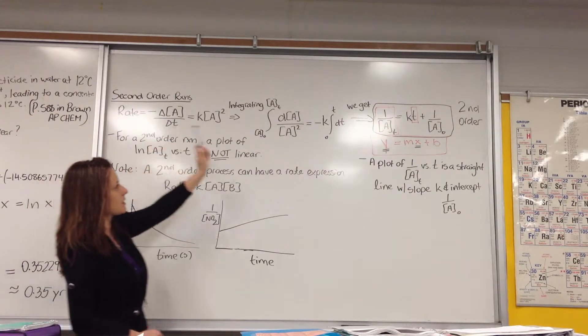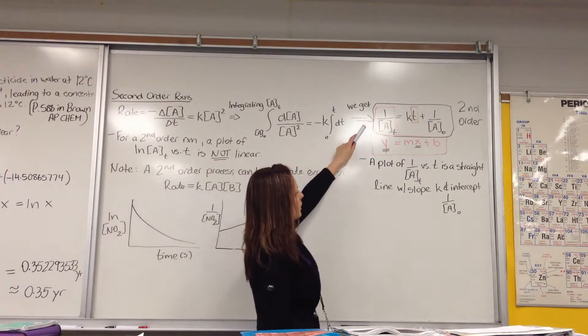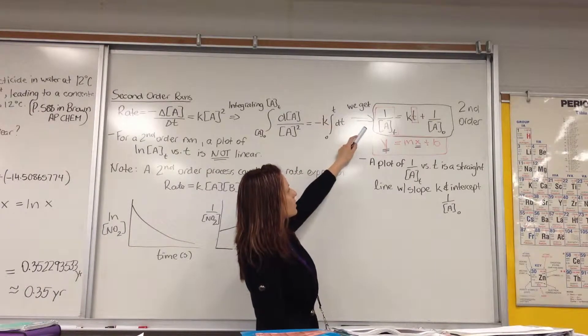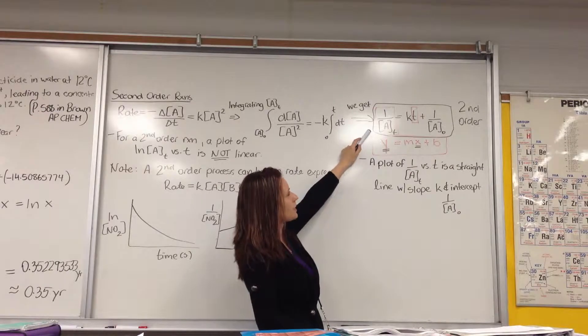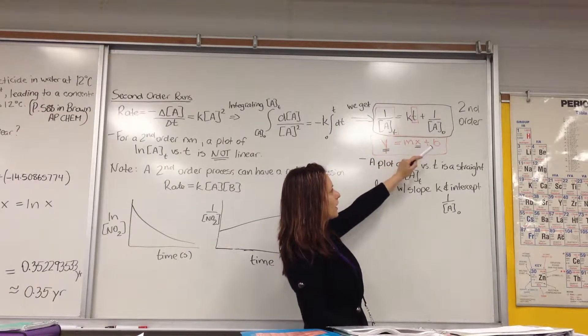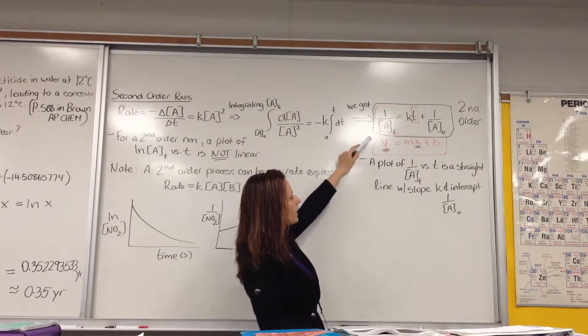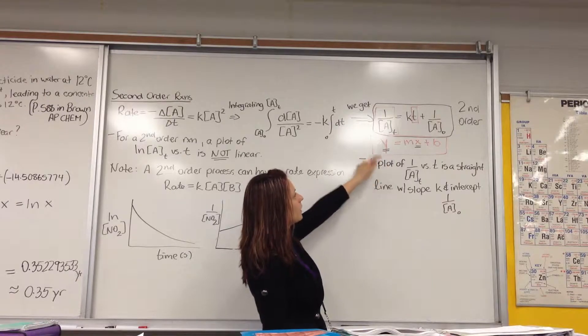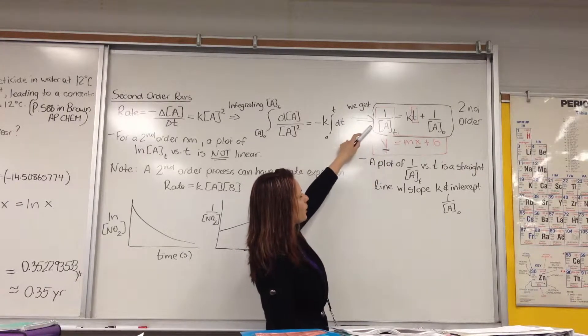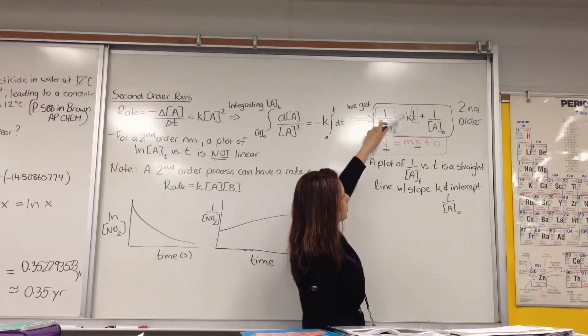If we integrate this expression, we now get the integrated rate law as 1 over A at time T is equal to kT plus 1 over A-naught. If you have a look again, this was rearranged in the form to give us y equals mx plus b, where y is equal to 1 over A at time T, and k is our slope.